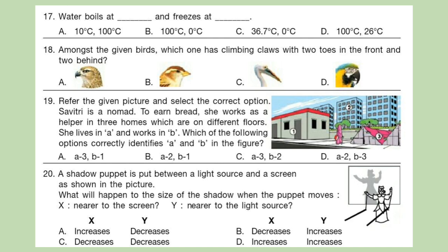Question 17: Water boils at blank and freezes at blank. Question 18: Amongst the given birds, which one has climbing claws with two toes in the front and two behind? Refer to the picture and select the correct option. Question 19: Savitri is a nomad. To earn bread she works as a helper in three homes which are on different floors. She lives in A and works in B. Which of the following options correctly identify A and B in the figure?